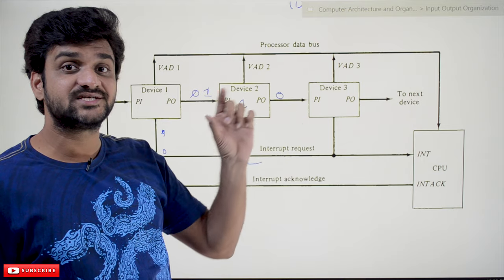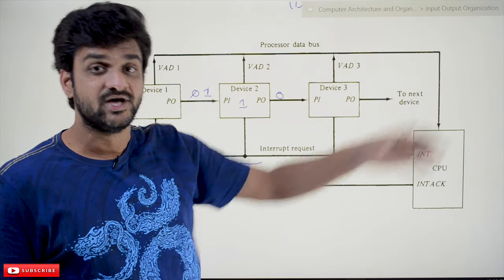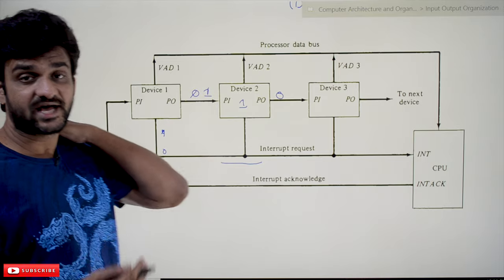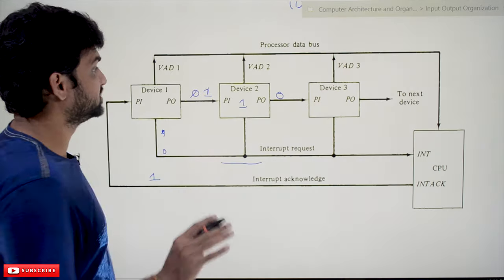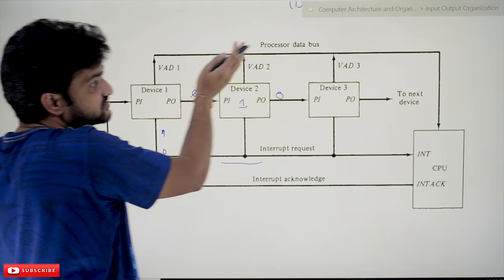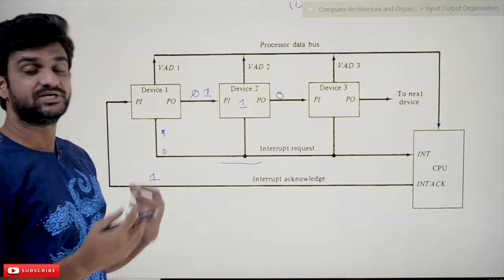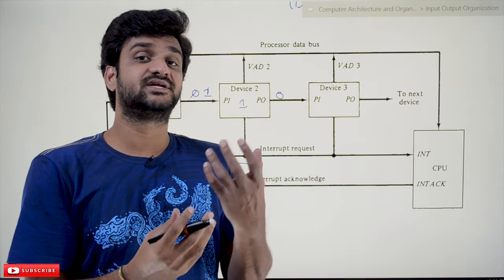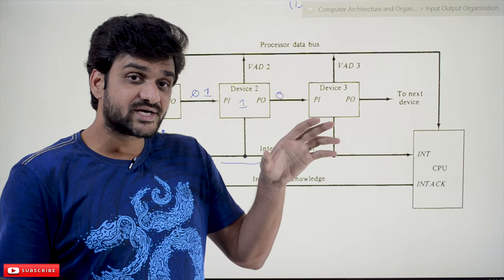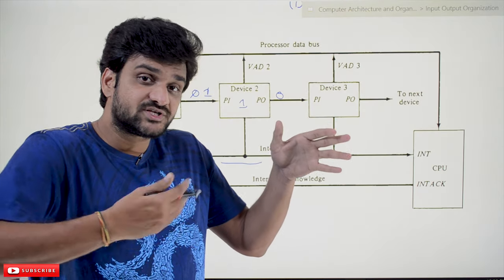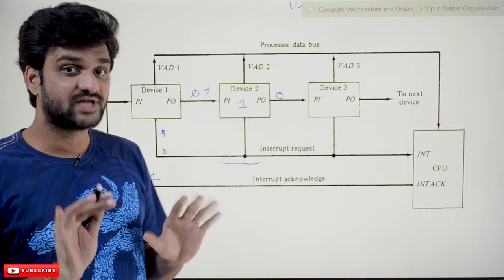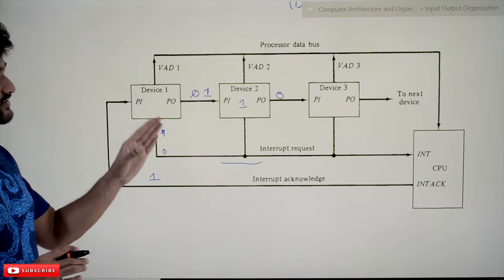After receiving the interrupt acknowledgement, the device will forward its vector address to the CPU. The vector address is the address at which the interrupt service routine programming for that device is located — this concept was covered in the introduction to interrupt-initiated I/O video. The vector address related to the interrupt service routine of the servicing device is passed to the CPU, and the CPU starts servicing that device based on its priority.